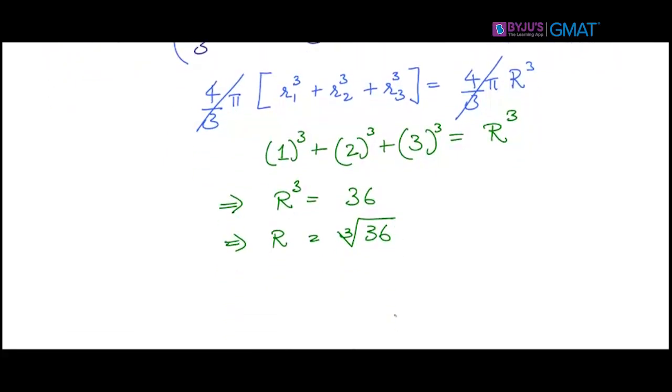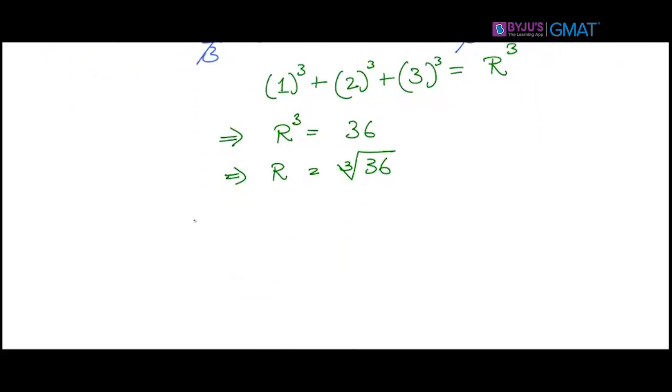So diameter of the big cheese ball will be twice the radius or 2 times cube root of 36, which is answer option E.